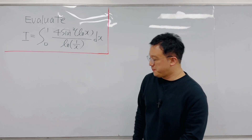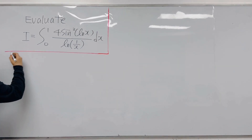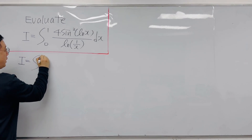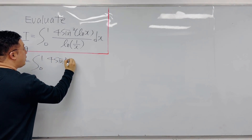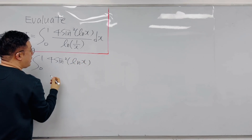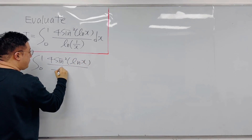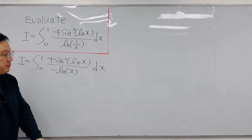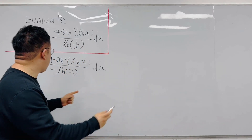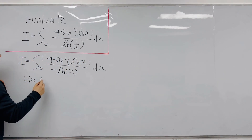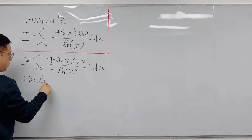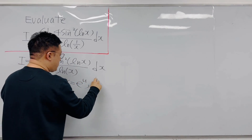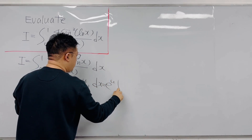Let's rewrite this integral. We can rewrite the denominator as negative ln(x), so the integral becomes the integral from 0 to 1 of 4 times sine squared of ln(x) over negative ln(x), dx. Now we'll apply the substitution u = ln(x), which means x = e^u and dx = e^u du.